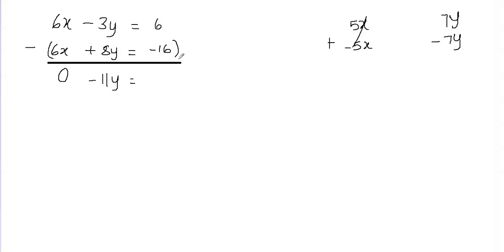6 minus negative 16 becomes 6 plus 16, which equals 22. So negative 11y equals 22, and we've successfully eliminated the x variable.